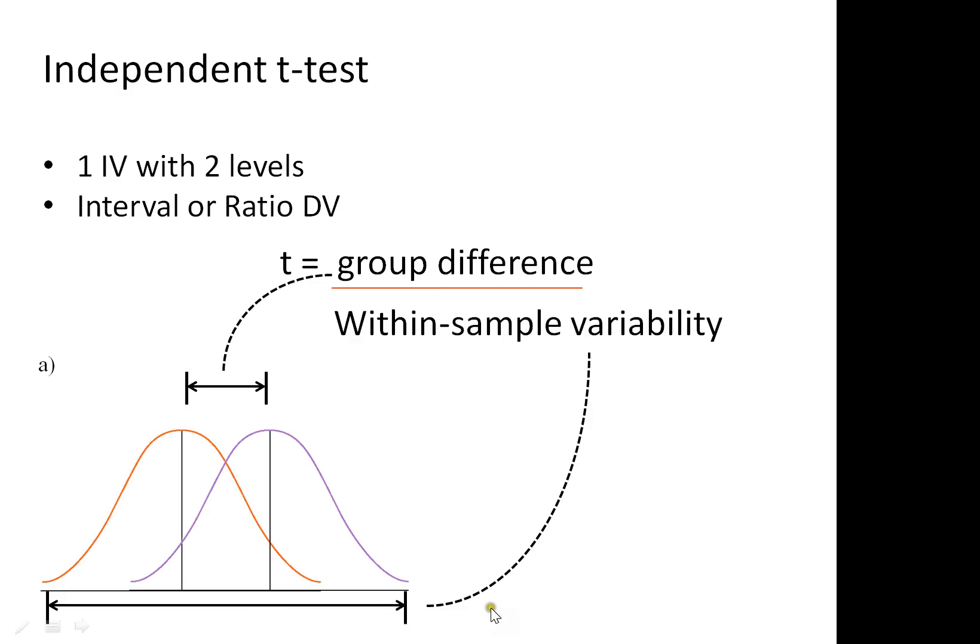Ideally, what we want is a t-value that is of large magnitude. It can be positive or negative, but it needs to be large. The question is, how large does it need to be in order for us to infer that there's something meaningful about the data that we've collected?